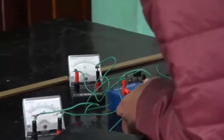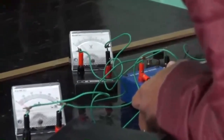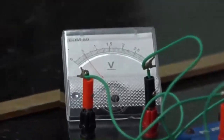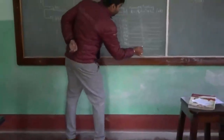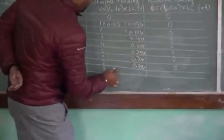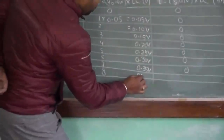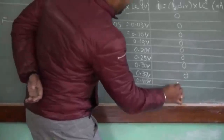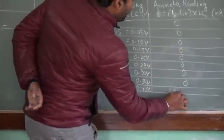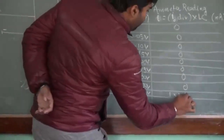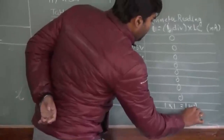For the 8th division in the voltmeter, we can see we have 1 division in the milliammeter. So for the 8th division, we are getting 1 multiplied by the least count of 1 milliampere, that is 1 milliampere of current.